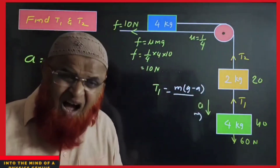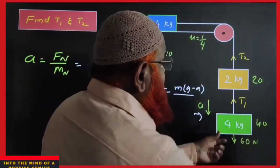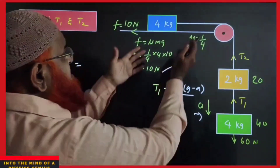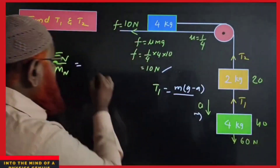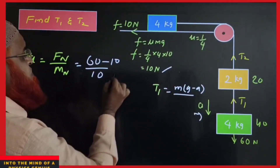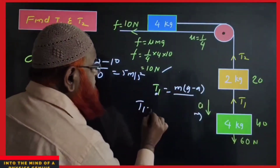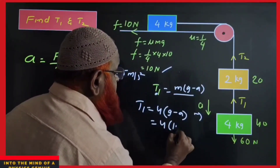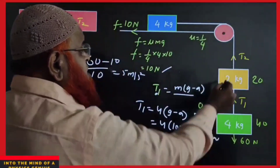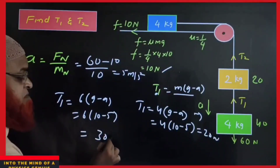Another tension problem: find T1 and T2. Net force is 40+20 = 60 newtons downwards, friction = μmg with μ = 1/4, giving 10 newtons. Acceleration = (60−10) / (4+2+4) = 50/10 = 5 m/s². For T1: block comes down, T1 = m(g−a) = 4×(10−5) = 20 newtons. For T2: total mass on T2 side is 2+4 = 6kg, so T2 = 6×(10−5) = 30 newtons.